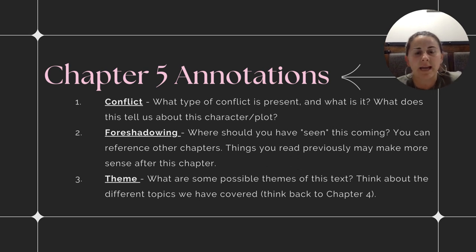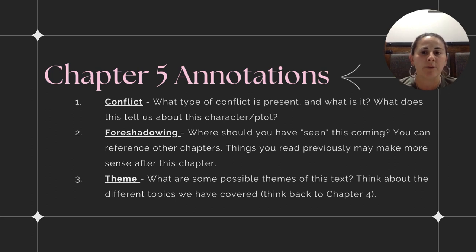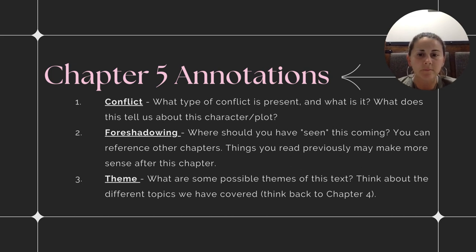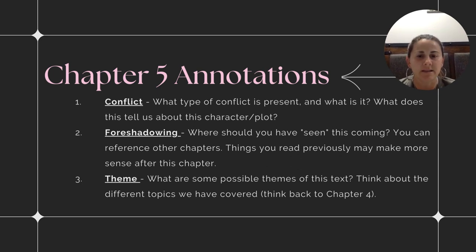The second thing we're looking at in Chapter 5 is foreshadowing. When you see something and make a connection with maybe something you read in a previous chapter, that may help you understand where the foreshadowing comes in, and you can see where you should have seen this coming. That will also lead you to other examples of foreshadowing in previous chapters as well. The last thing we're looking for is to start exploring themes of the text — think about what are some possible themes, drawing on different topics we've covered in other annotations or class discussions.